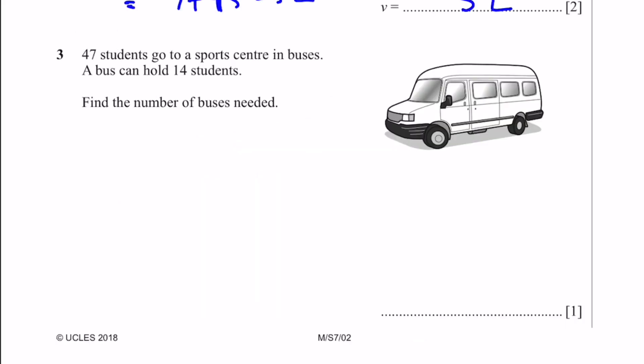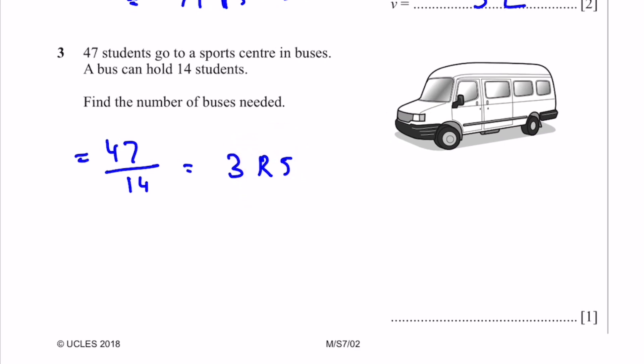Question 3. 47 students go to a sports center in buses. A bus can hold 14 students. Find the number of buses needed. That's equal to 47 divided by 14, which is 3 with a remainder of 5. For the remaining 5 students, we also need another bus. That means we add 1 to 3, so we get 4 buses. That's the answer.